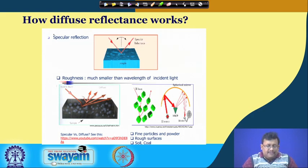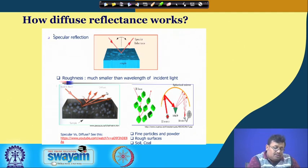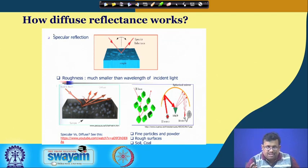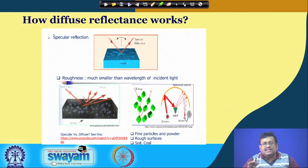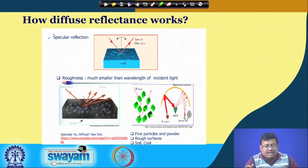Why is it called diffuse reflectance? There are two types of reflection: specular reflection and diffuse reflection. Specular reflection occurs from very plain surfaces like a mirror or water surface, where the angle of incidence always equals the angle of reflection. Diffuse reflection occurs from rough surfaces — since soil is a rough powder surface, the angle of incidence is not equal to the angle of reflection. Diffuse reflection generally occurs from fine particle, powder, and rough surfaces like soil and coal.